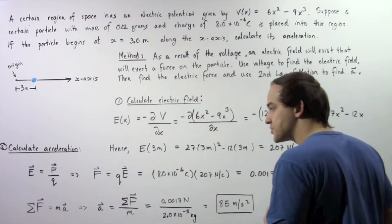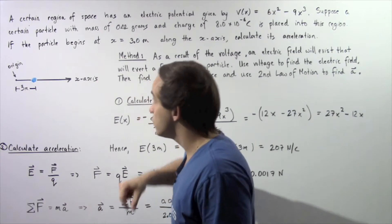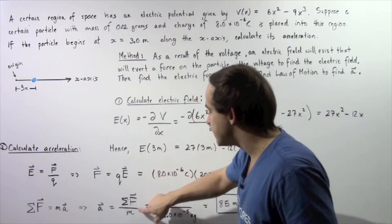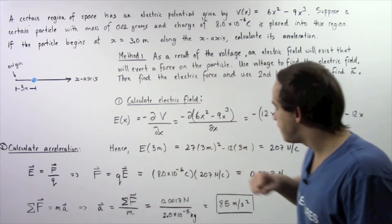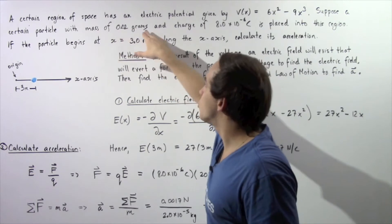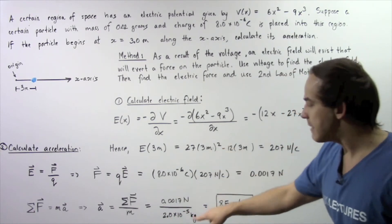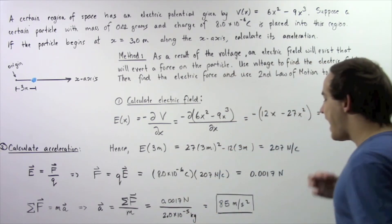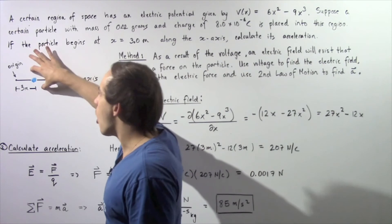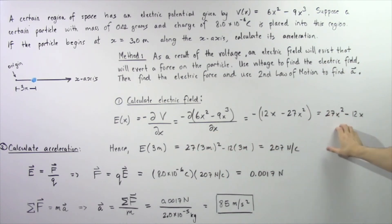This is our net force. By the second law of motion, the net force along the x axis equals mass multiplied by acceleration. Solving for acceleration, we divide the net force by the mass. The net force is 0.0017 newtons, and the mass is 0.02 grams converted to kilograms, giving 2 times 10 to the negative 5 kilograms. Dividing, we get 85 meters per second squared as the acceleration of our particle placed into the electric field given by this equation.